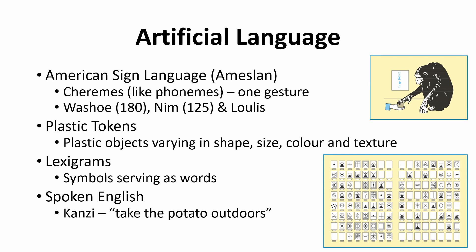There have also been artificial languages based on plastic tokens varying in shape, size, color, and texture, each associated with different meanings — passing a token could mean one type of food versus another, showing some comprehension. Lexigrams — boards of arbitrary symbols serving as words — have also been used with great apes. To communicate, the ape or researcher would point to symbols: for example, pointing to the symbol for water or food. There is even some evidence of great apes understanding spoken English.